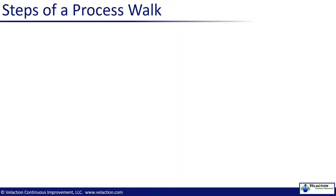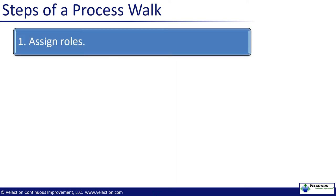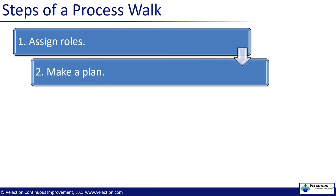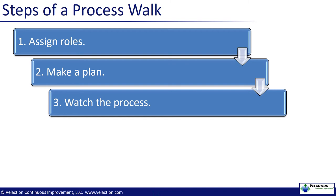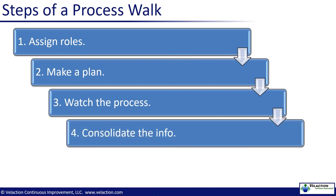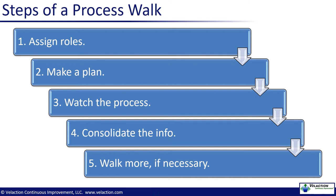The steps of a process walk are relatively simple. Your first task will be to assign roles. Before you go down and talk to anybody in the work area, make sure you have a plan. You want to disturb them as little as possible. Also, make sure you cover all of the bases so you don't have to go back and gather up any additional information. Once your planning is complete, go observe the process. The team should regroup once the observation is complete and consolidate the information. As they look over the data they have collected, the team will often uncover additional questions or gaps in their information. In these cases, the team should send a small group back to close out any information gaps on what they need to know to make improvements.